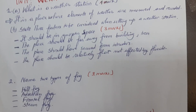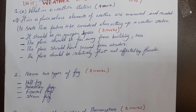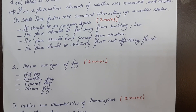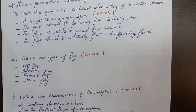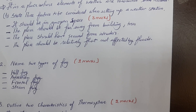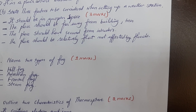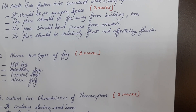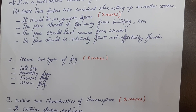Question one has sub-question A, which is to define a weather station, and sub-question 1B. Sub-question B on question one is: state three factors to be considered when setting up a weather station. There are some factors that one can refer to when setting up a weather station in a certain place.